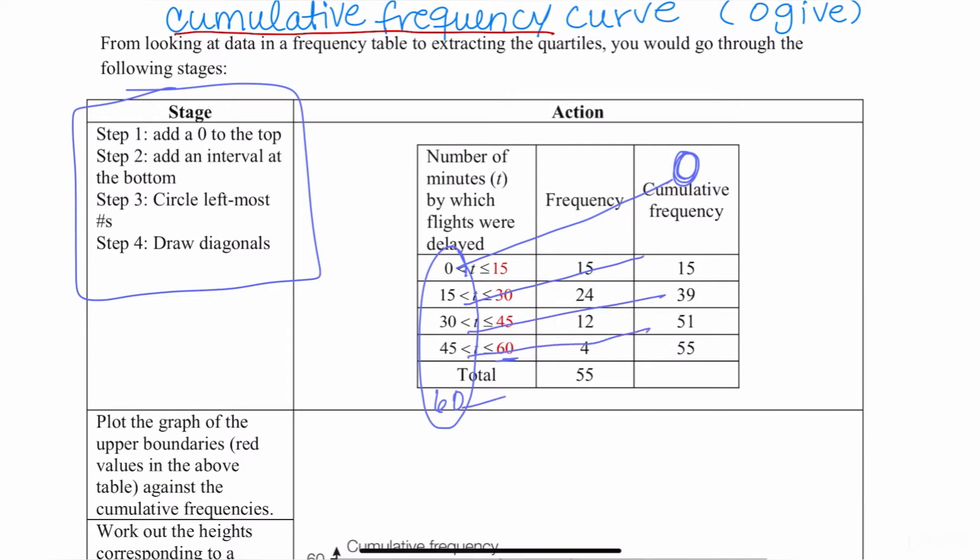And what that does is give us exactly the ordered pairs that we want to graph. So the ordered pairs here are going to be 0, 0, 15, 15, 30, 39, 45, 51, and 60, 55. So those are the five ordered pairs that we are going to plot so that we can create our cumulative frequency curve.